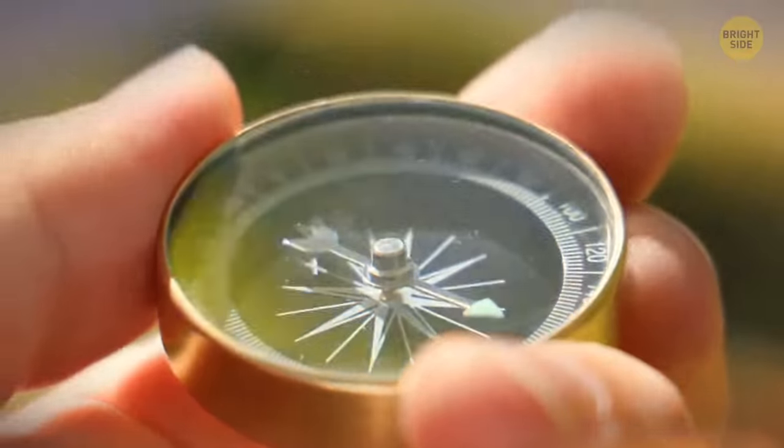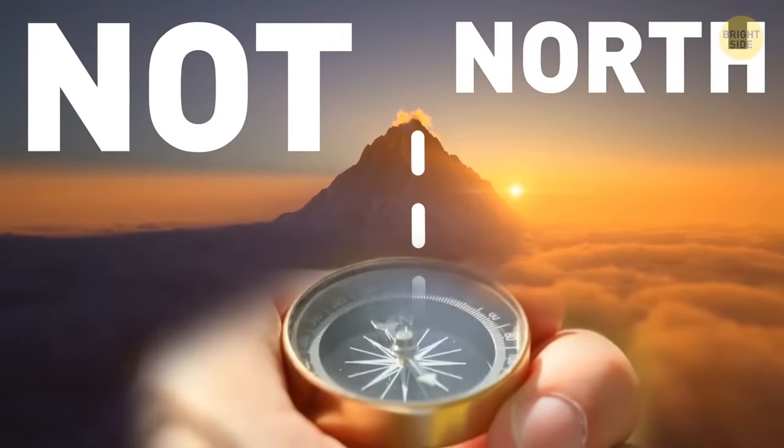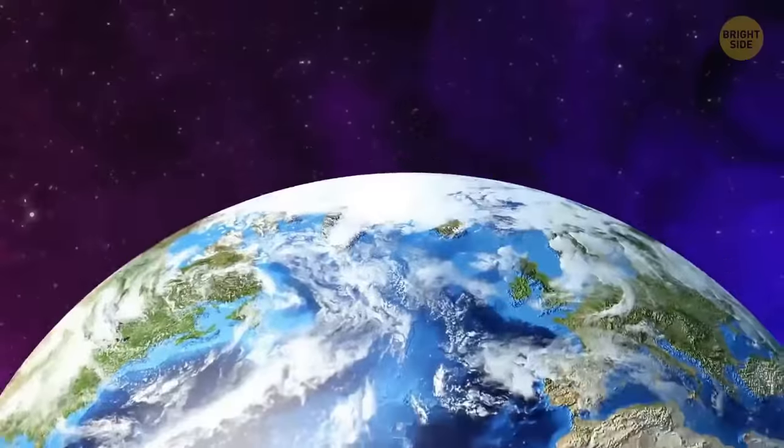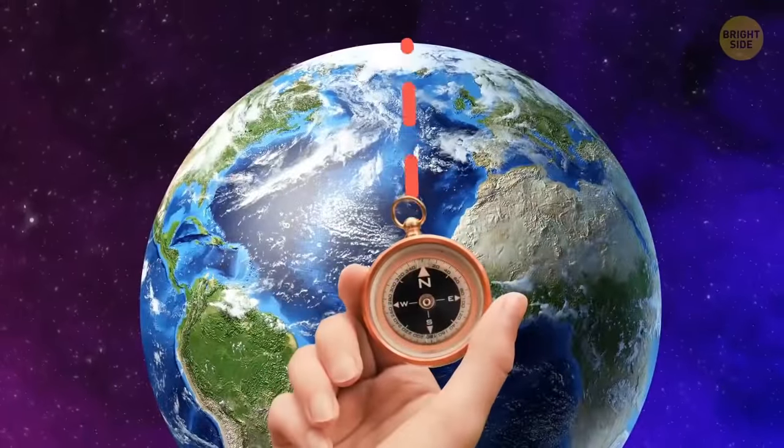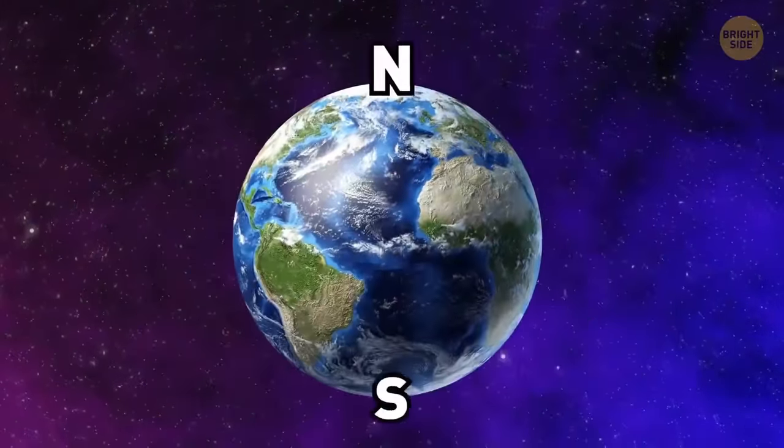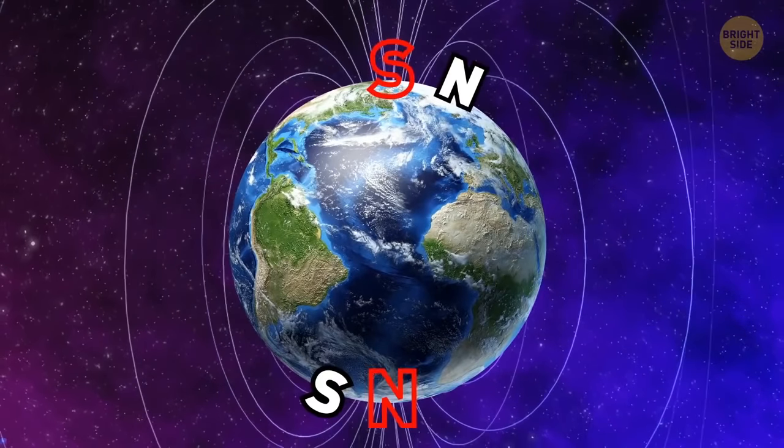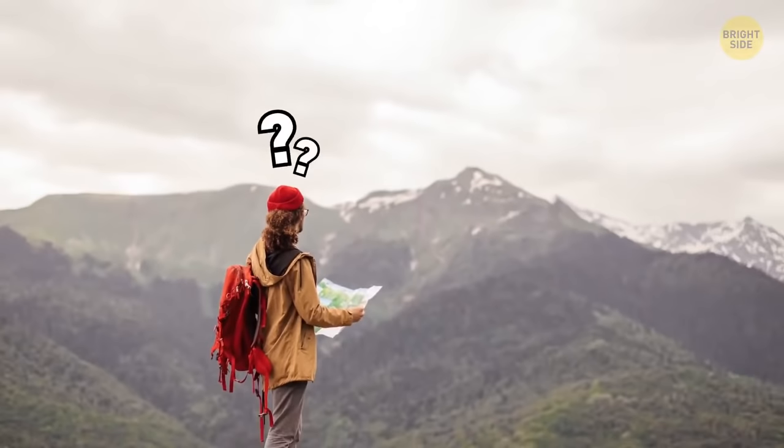A compass uses magnets to point to the magnetic north pole, but it's not really north at all. The north pole of a compass magnet points toward the north because the north and south attract. Earth's south magnetic pole is near the geographic north, while the north pole is near Earth's geographic south. Confusing, isn't it?